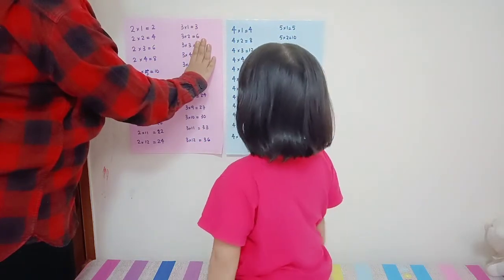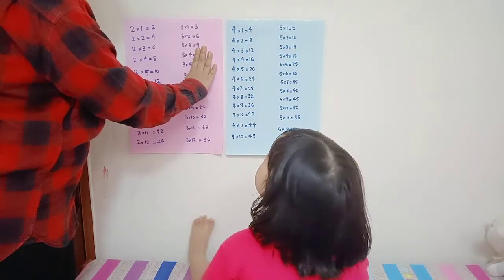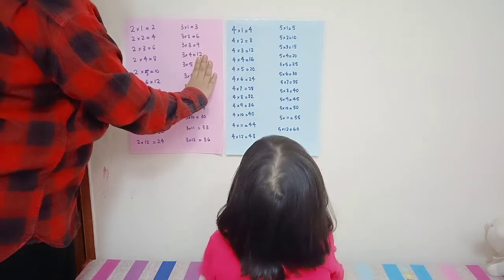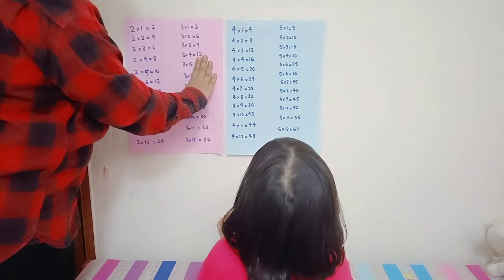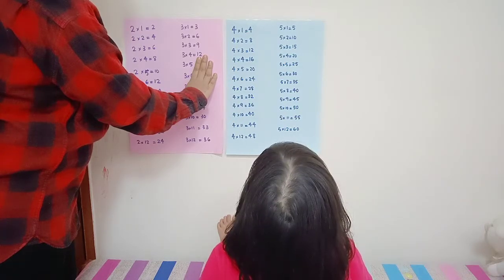six. Three times three nine. Three times four... is it? Three times four equals twelve. Three times five... three times five equals fifteen.